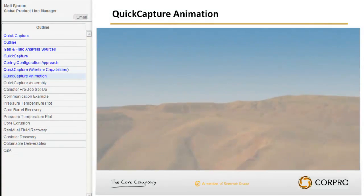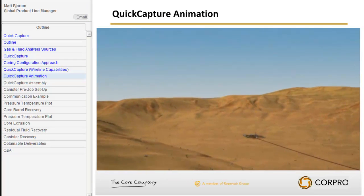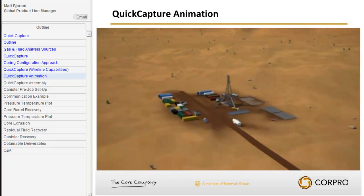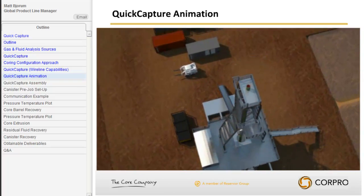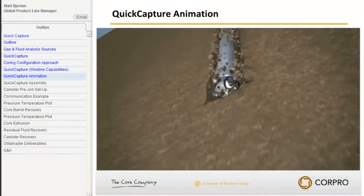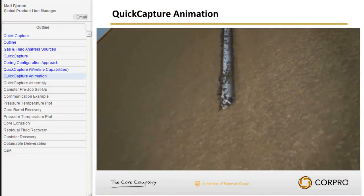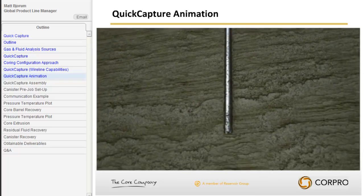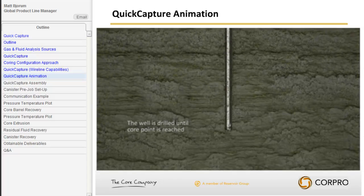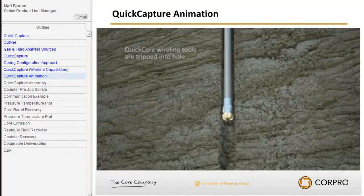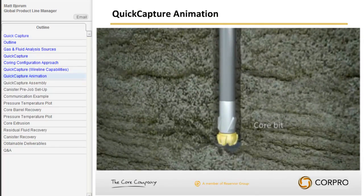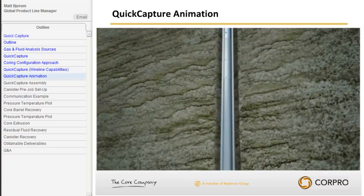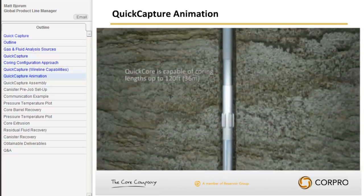Traditional pressure coring technology has only been available in conventional coring applications, which means the drill string has to be tripped in and out to cut and recover the core — adding significant rig time costs and safety concerns, as most accidents on a rig floor occur during tripping operations. With CorePro's quick capture technology, all coring operations can be operated by wireline, running on CorePro's quick core wireline platform. The well is conventionally drilled until core point is reached, then the wireline coring tools are tripped in and coring commences with continuous core runs of 3 inch (76 mm) up to 120 feet (36 meters) in length.